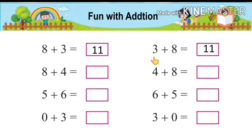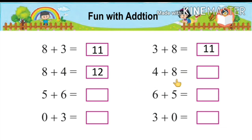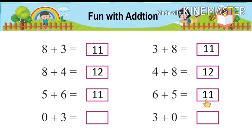It means that if we interchange two digits in addition, then the answer will be the same. Next example: 8 plus 4 will become 12, and 4 plus 8 — the answer will be the same: 12. Then 5 plus 6, answer 11; and 6 plus 5, answer will be the same: 11. Then 0 plus 3, answer will be 3; and 3 plus 0, answer will be 3.